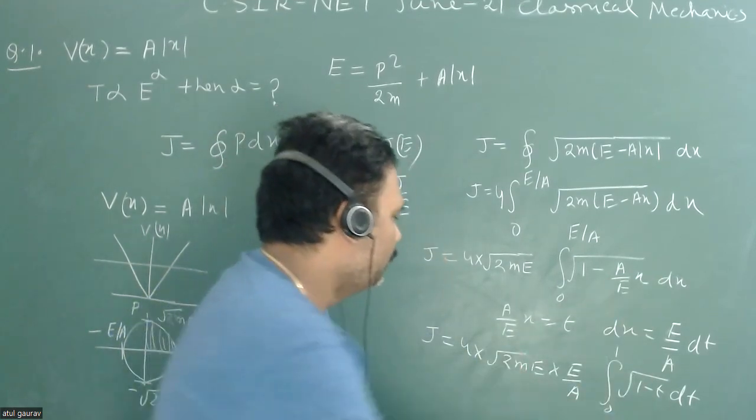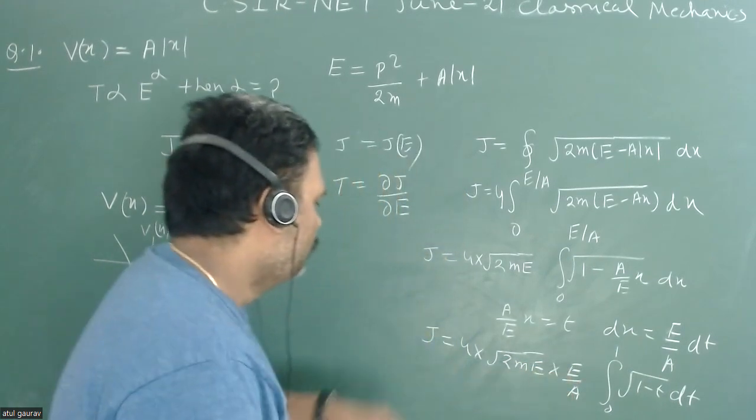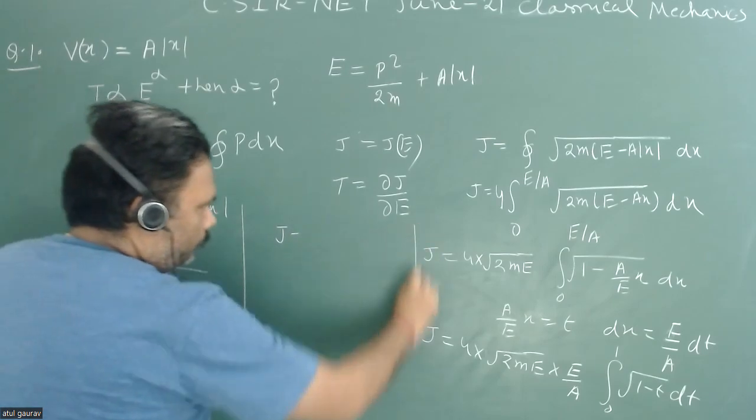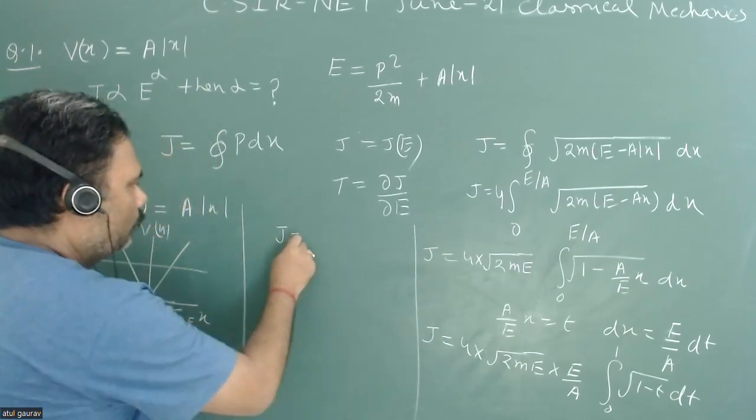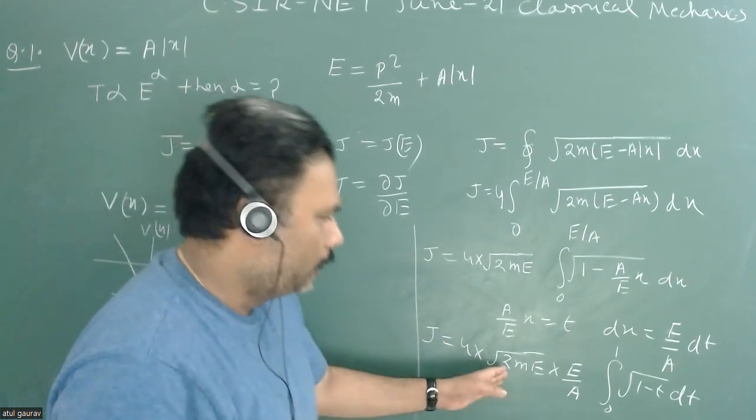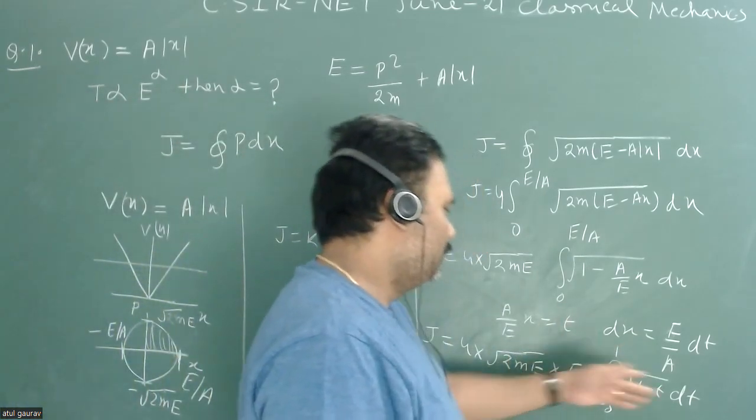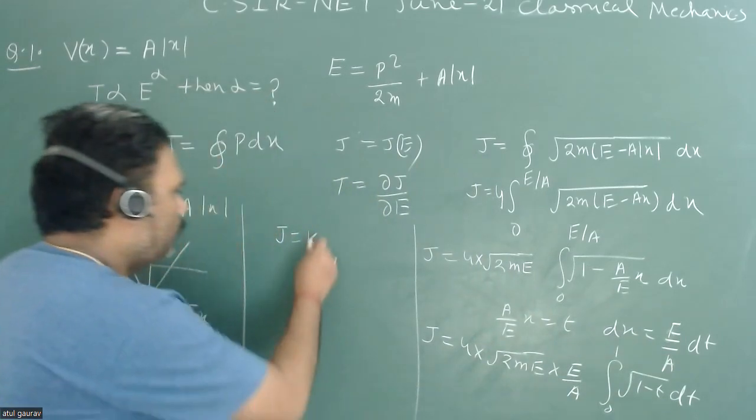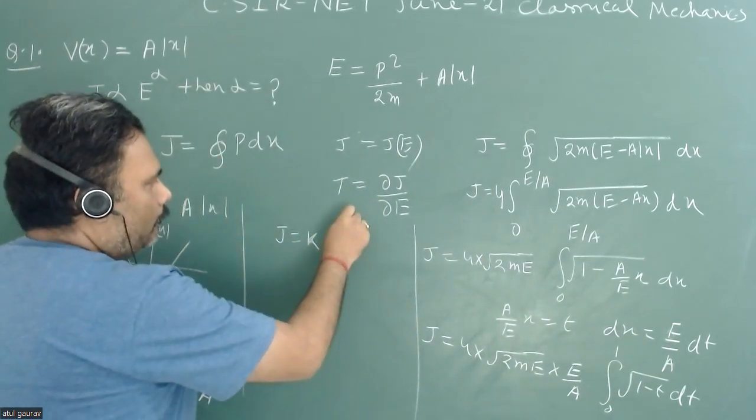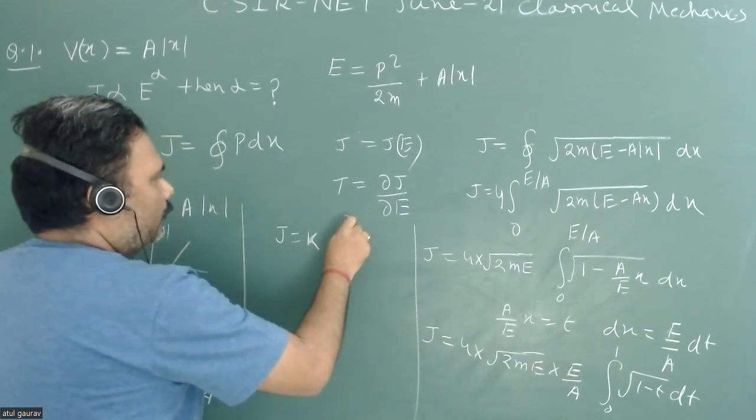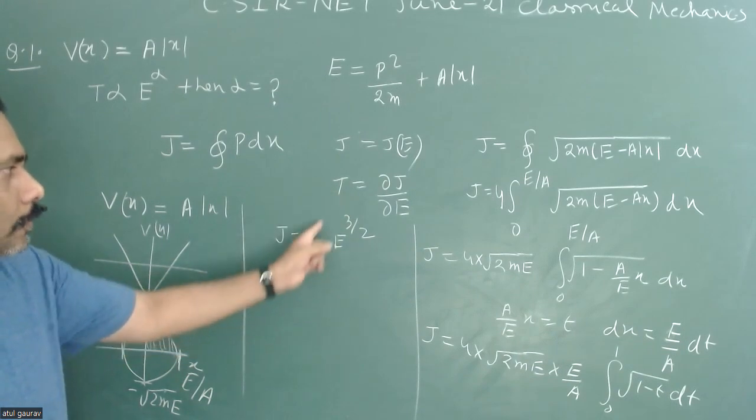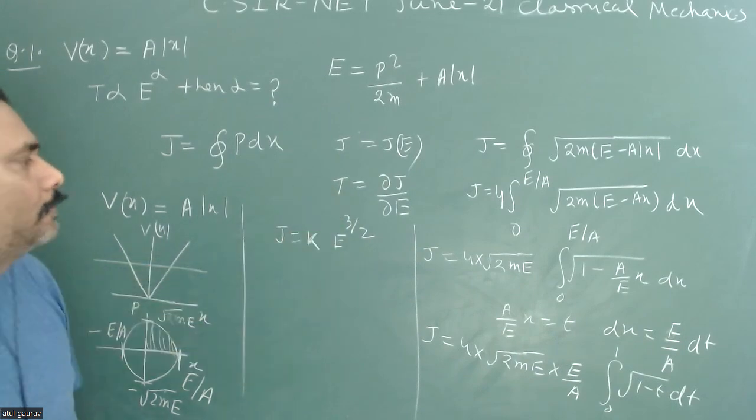So I am just only interested in J versus E. So here I can write J equals some constant, let's say 4 root under 2ma and all this thing, this integral will treat it as some constant k, E to the power 1/2 into E, so that is 3/2. So J equals k E to the power 3/2. Now we will use this formula.